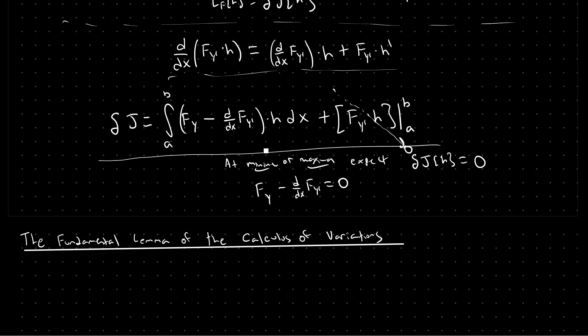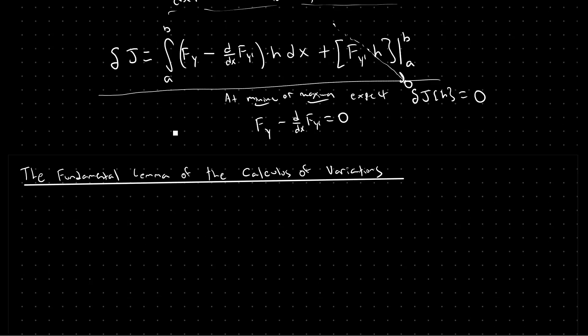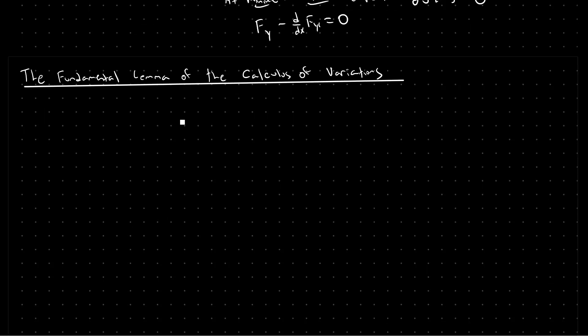Continuing on, I'd like to explain the conditions under which taking an integral of this form, instead of getting equal to zero, will imply that the function right here also has to be equal to zero. The first step in this direction is to explain what's called the fundamental lemma of the calculus of variations. This is actually Lemma 1 in the book by Gelfand and Fomin.